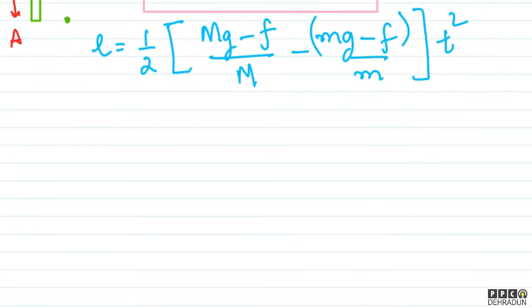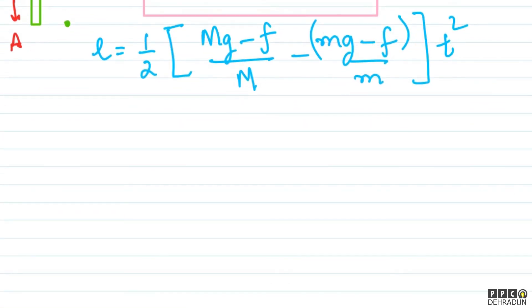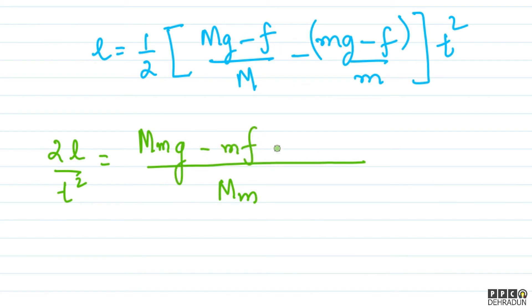Now see, I think it's become quite easy. Now we simply have to solve. First, I'll take 2 and t squared to the left hand side, so it becomes 2L upon t squared. Now what is this equal to? Taking LCM in the denominator, capital M into small m. So it becomes capital M times small mg minus m into f, minus - here what comes - capital M times small mg, minus minus is plus, so it becomes capital M into friction. So see here, what we got - this is canceling out, this will cancel out.